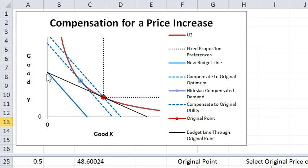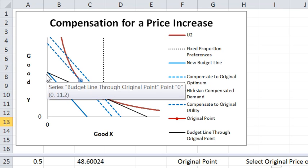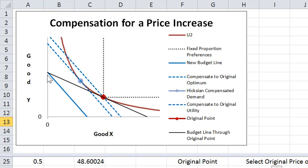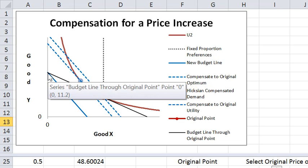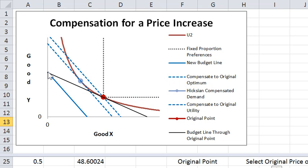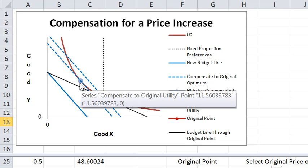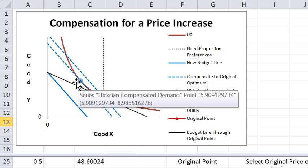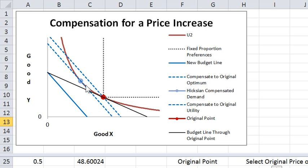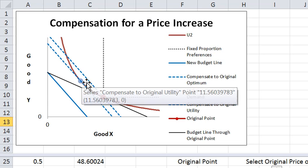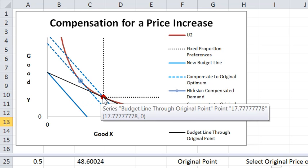You can read the compensation, especially if the price of good Y is 1, by this vertical distance between the new budget line and the compensated budget line. That's the increase in income to compensate the consumer to get to the original indifference curve. And the point here is that that is typically less because of substitution than compensating to the original optimum.